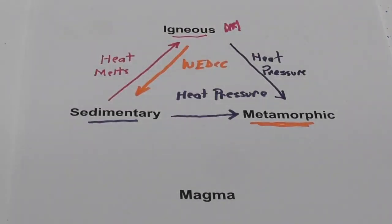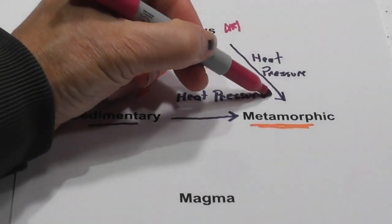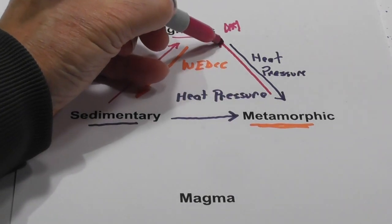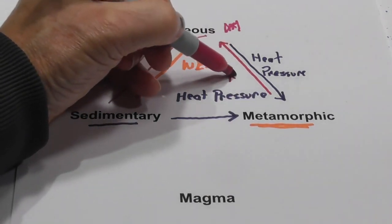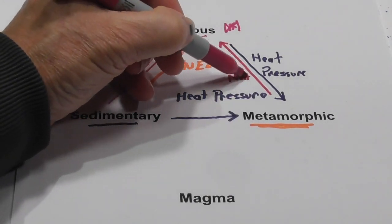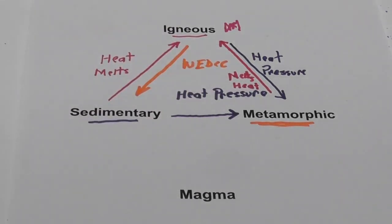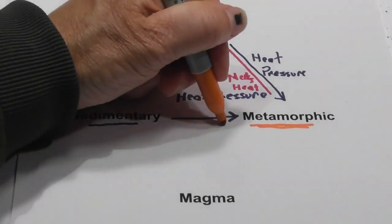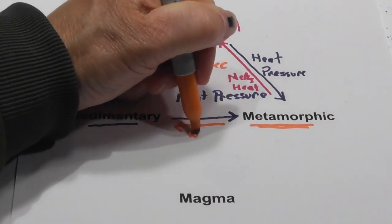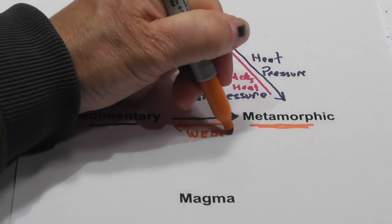Now, a metamorphic rock can become an igneous rock if it is exposed to so much heat that it melts. So I'm just going to write melts from heat. Okay, so what have I missed here? How about a metamorphic becoming a sedimentary? And that is WEDCC.